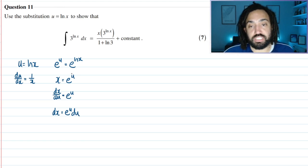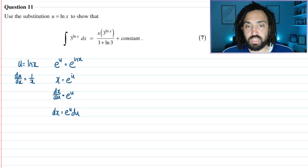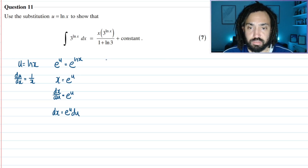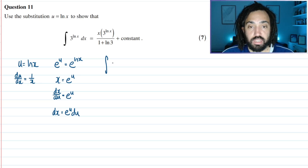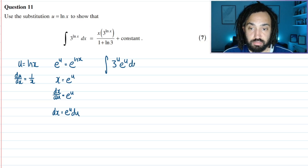Now we're ready to substitute in. Let's have a look. The integral becomes 3^u multiplied by dx, which is e^u du.